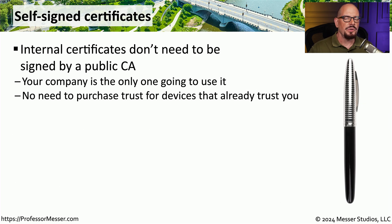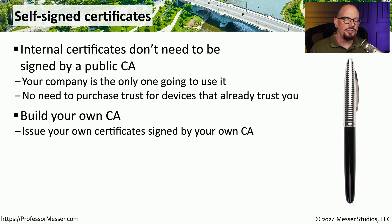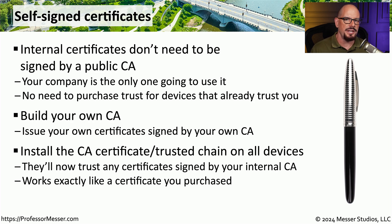On the internet, it's useful to have a third party provide trust, so that anyone in the world can reference that certificate authority and know there's a trust associated with those digital certificates. But if all of your devices and users are within your own organization, you could create your own certificate authority. Your internal CA will be self-signing all of the certificates that are created. You can get public off-the-shelf software to build your own certificate authority and start signing your own certificates within your organization. As long as all users in your organization trust the CA, they can therefore trust any certificates created by that same CA.